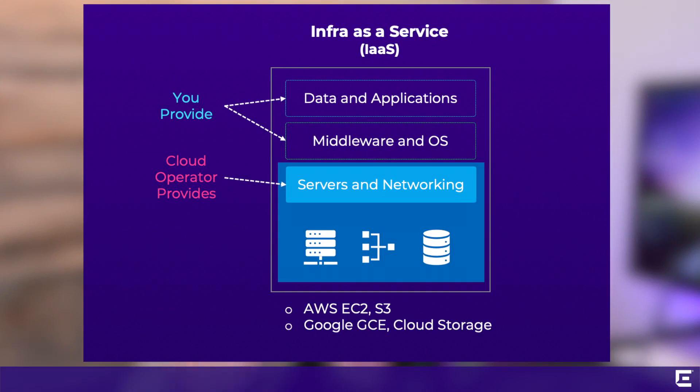So if we tease it apart, the as-a-service models — try not to tune out — there are basically three: infrastructure as a service, platform as a service, and software as a service. Infrastructure as a service is someone else taking care of all the rack space, cooling, and giving you virtual compute, storage, and memory hosted for you. You have access to that infrastructure and the network, and you can build whatever you want — it's basically a blank slate. But you're still responsible for upgrading operating systems, security patches — all of that.